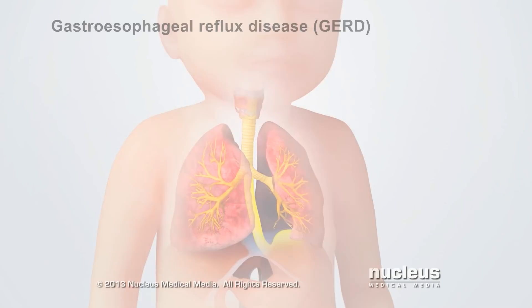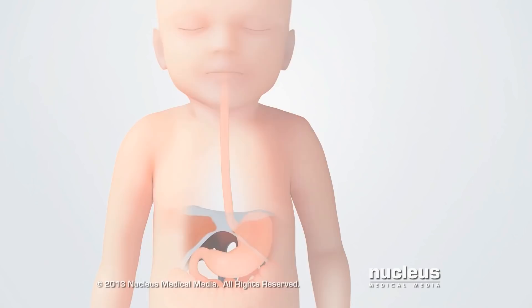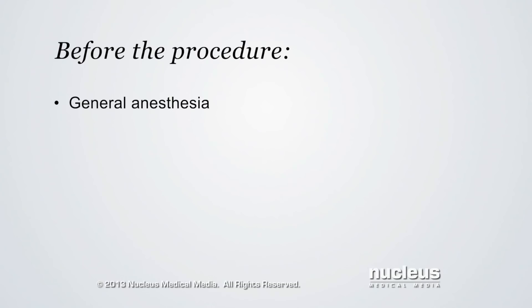Although spitting up is normal, GERD may require a procedure called fundoplication. Before the procedure, the child will be given general anesthesia to put him or her to sleep. A breathing tube will be inserted through the nose or mouth and down the throat to help the child breathe during the procedure.